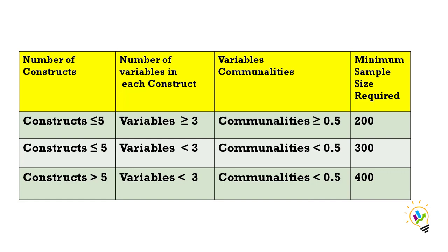Now, if the constructs are less than five but variables decrease to less than three, and communality is also reduced to less than 0.5, then the sample size increases to 300. If the number of constructs increases, variables in each construct reduce, and communality also reduces, even more sample size is needed. Keeping it simple: if the number of constructs increases, sample size increases; if variables per construct reduce, sample size increases; and if communality reduces, sample size also increases.